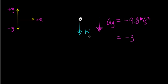So if this is our free body diagram, I have one force acting on this object — the force due to gravity pulling it in the downward direction. The force of gravity accelerates this object in the downward direction, so notice both the force and the acceleration are in the same direction. That's what Newton's second law says: the net force acting on an object accelerates it in the direction of the net force.